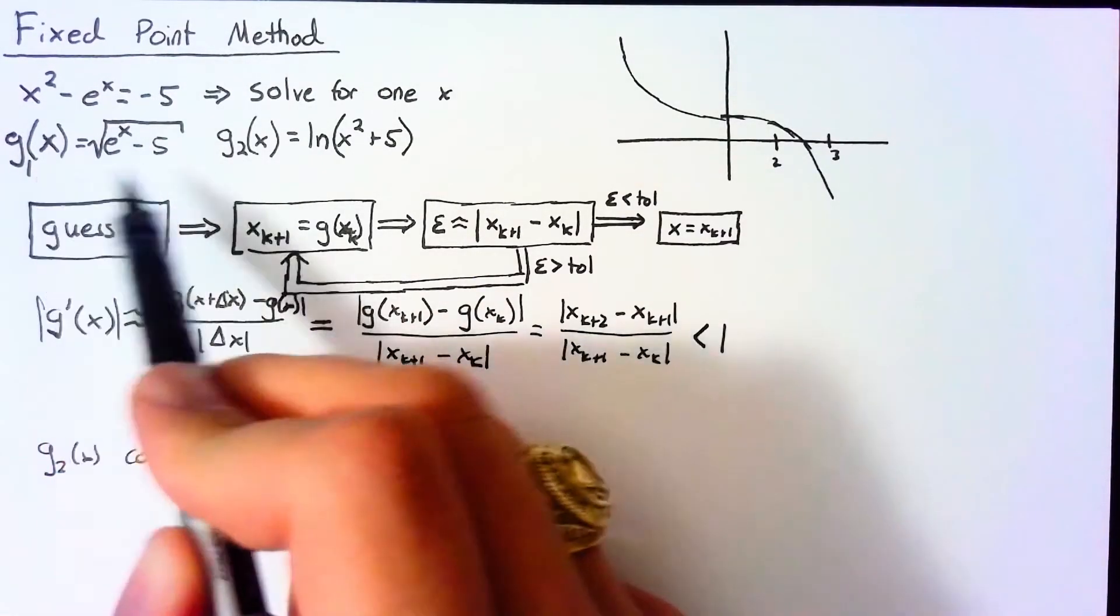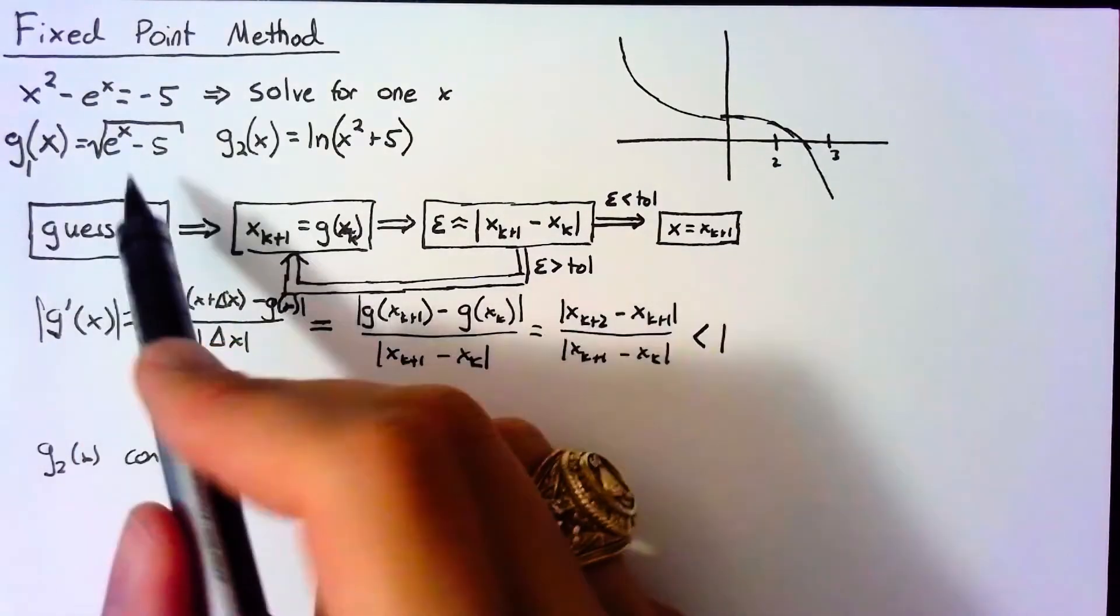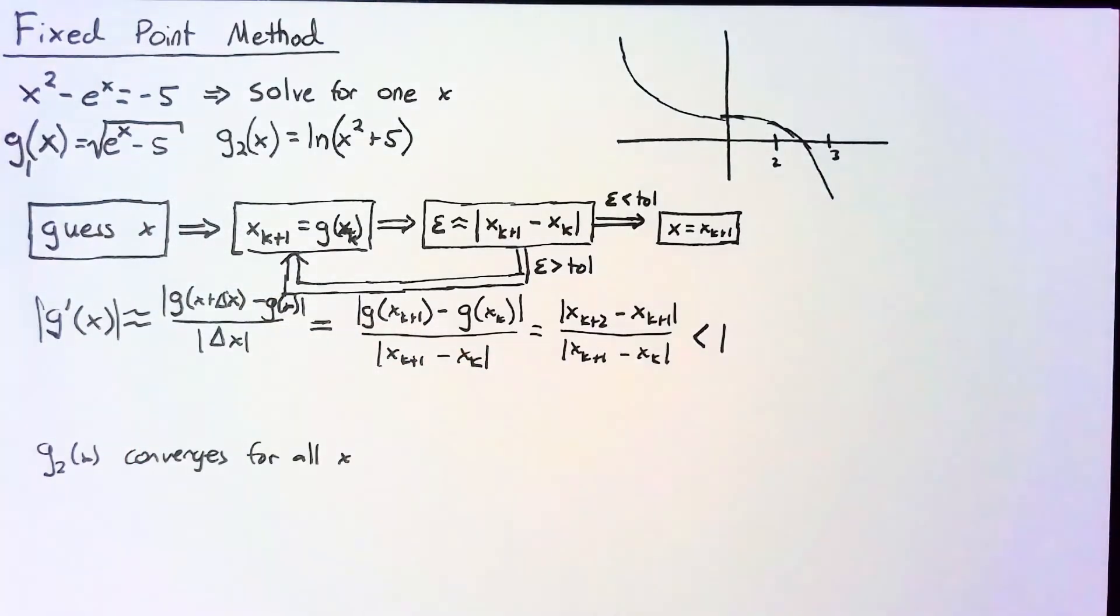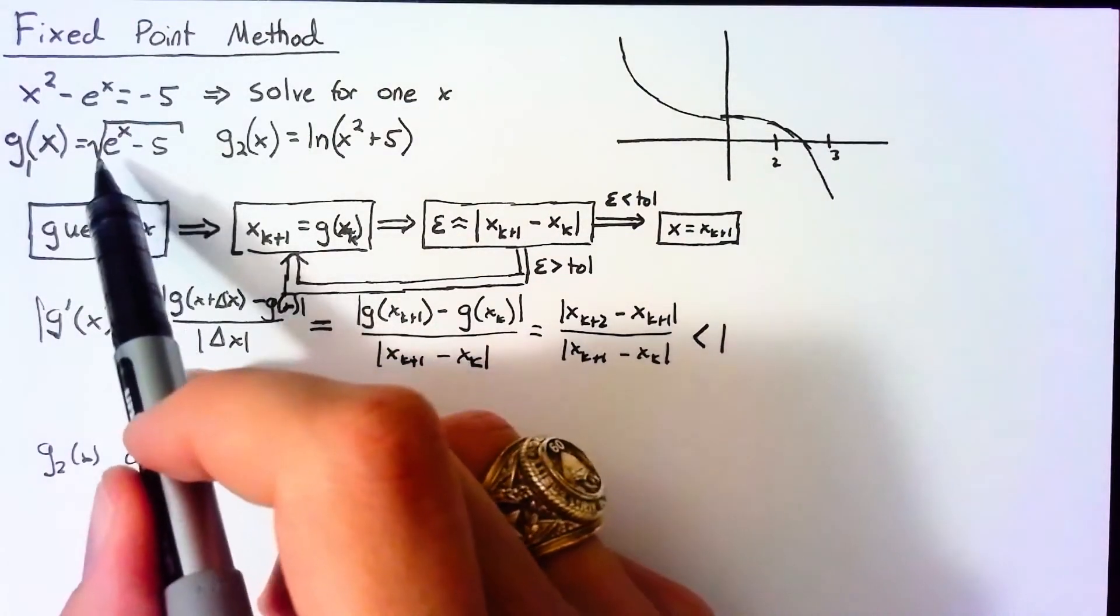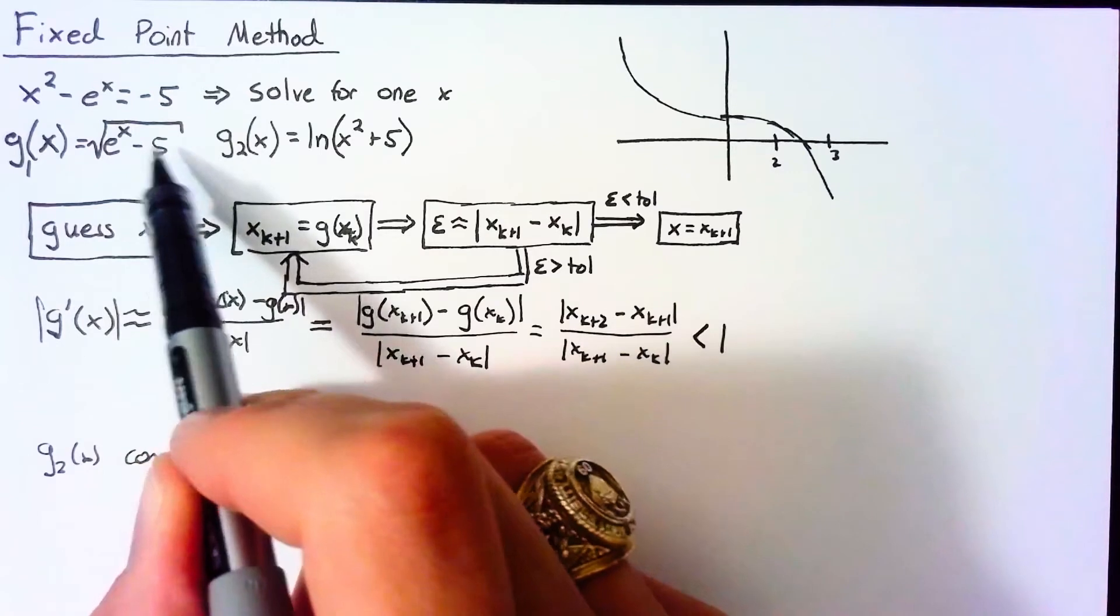If we do the same thing for g₁(x), and the math gets a little ugly there, we find that the absolute value of this is greater than 1 around x = 2. And we start running into trouble below x = 2 because this e^x becomes less than 5, which means that we end up with an imaginary number.